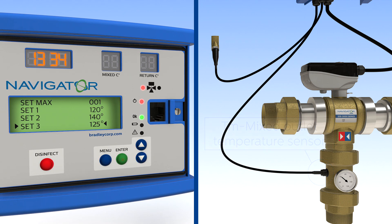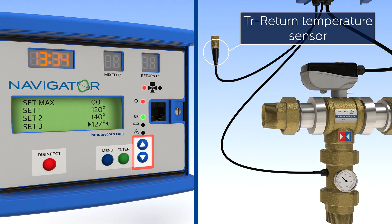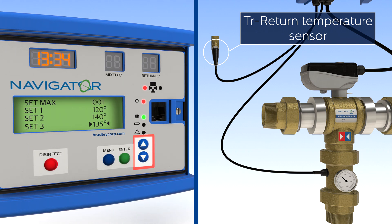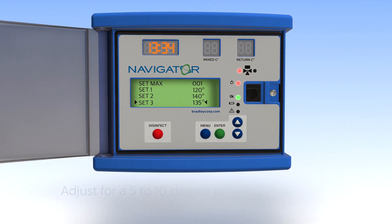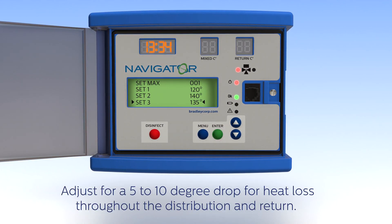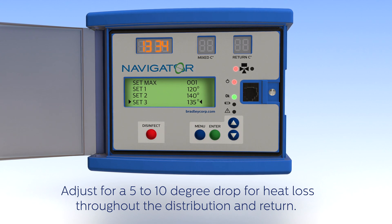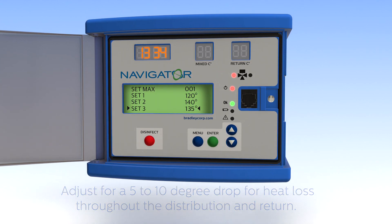Next, adjust Set 3, which is the temperature you want to see at the return sensor during disinfection. Use the up and down arrows to adjust. This will confirm the water has reached a temperature hot enough to kill the bacteria, ensuring the thermal disinfection cycle is successful.